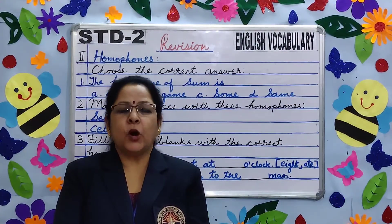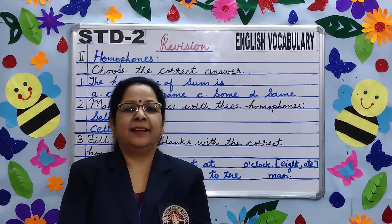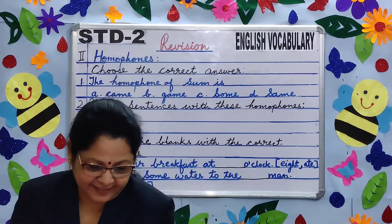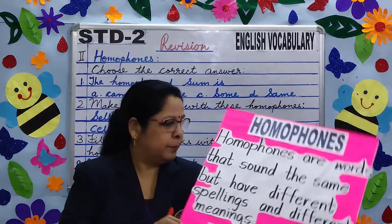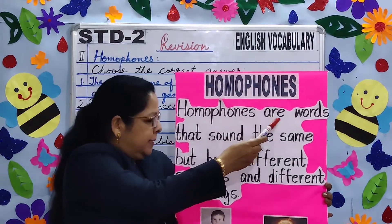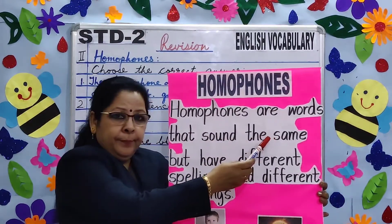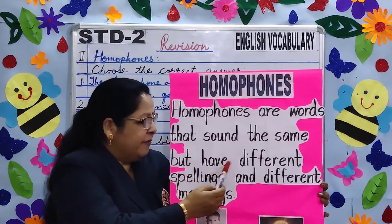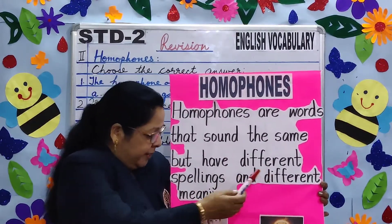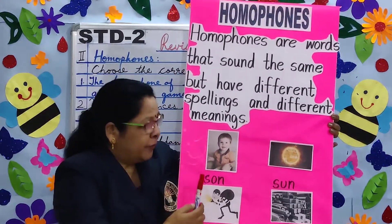The second topic is homophones. What are homophones, children? Homophones are words that sound the same but have different spellings and different meanings. For example: 'son' (S-O-N) and 'sun' (S-U-N), 'steal' (S-T-E-A-L) and 'steel' (S-T-E-E-L).